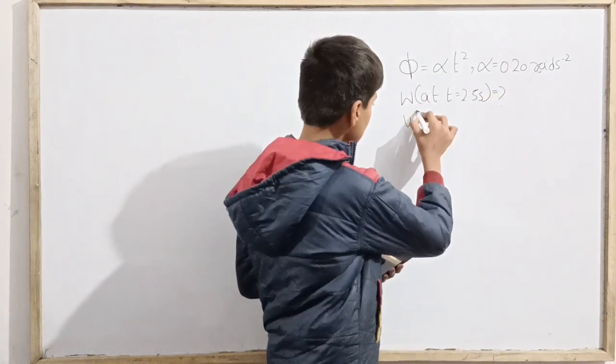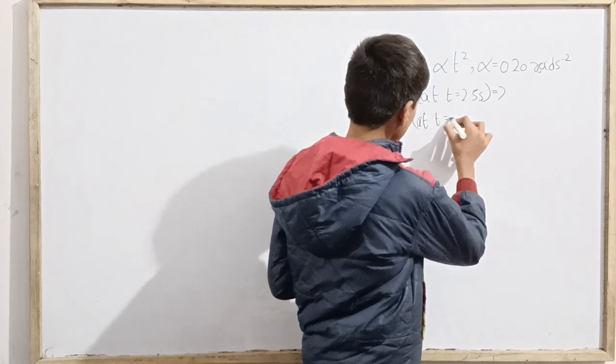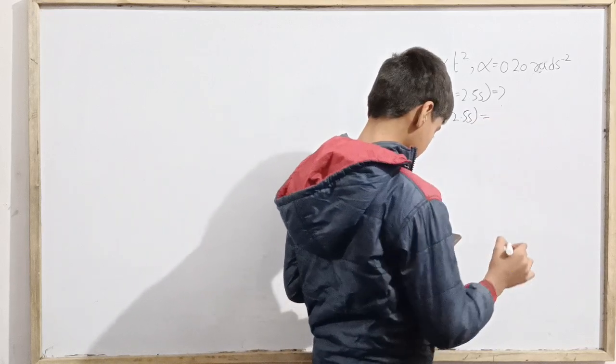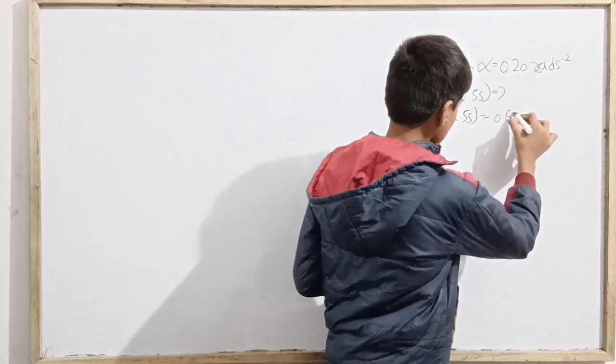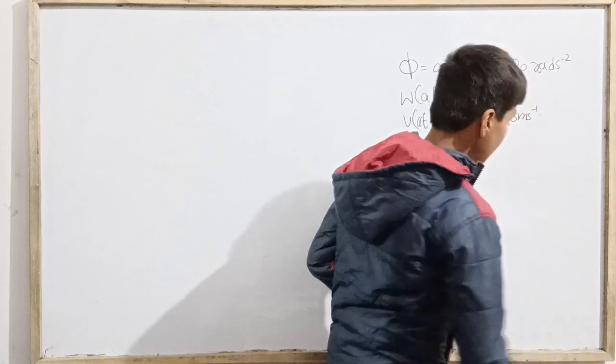And if it is given that linear velocity v of the point at that time t equals 2.5 seconds, that is given to be 0.65 meter per second. This is our question, now we have to just solve it.